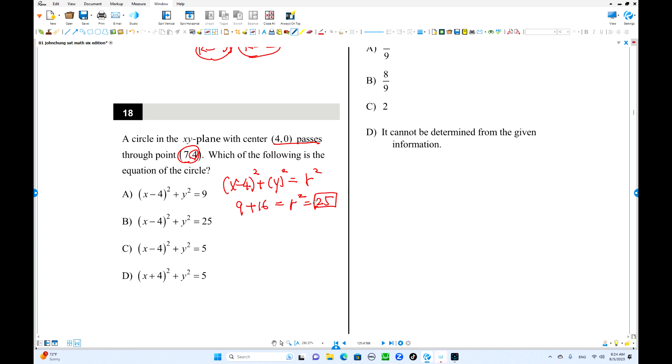So where is it? X minus 4 squared plus y squared equals 25 is there. Or you can find the r using the distance formula, this is actually radius, where this is 7 minus 4 squared plus 4 minus 0 squared. This is also 5, but we need the r squared, which is 25.